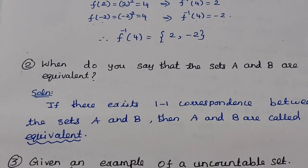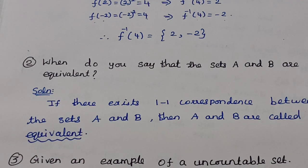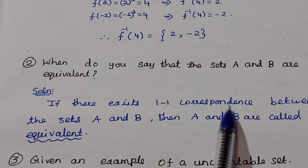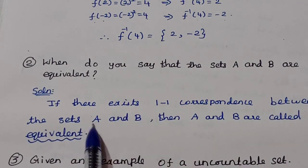Next question: when do we say that two sets A and B are equivalent? Two sets A and B are said to be equivalent if there is a one-to-one correspondence between the sets A and B.